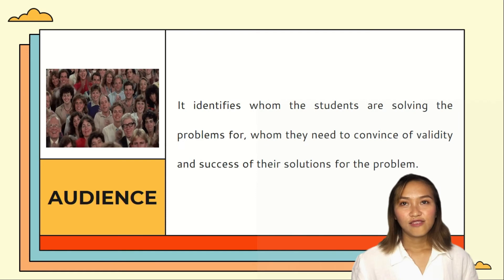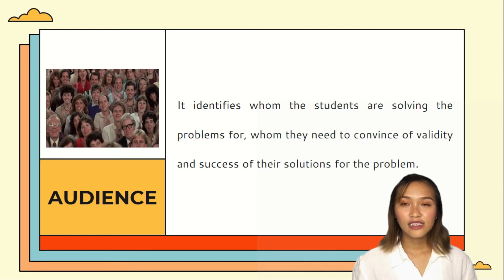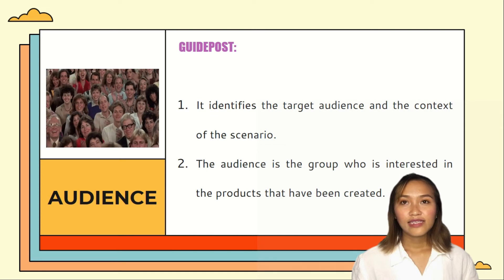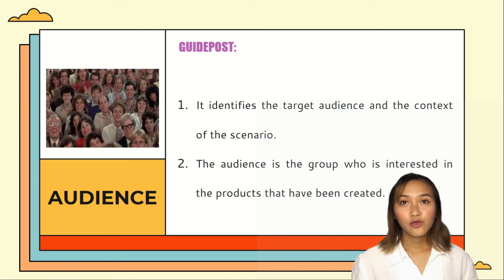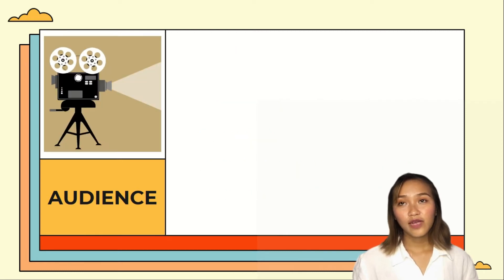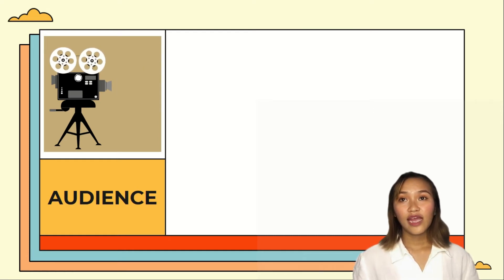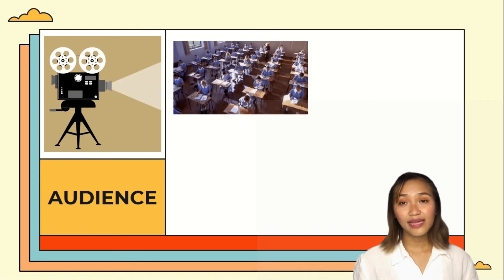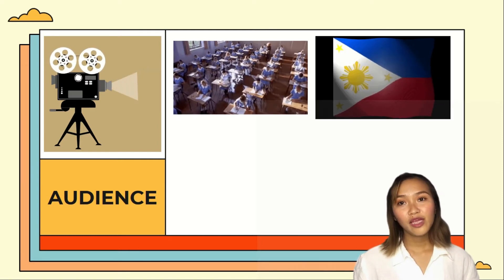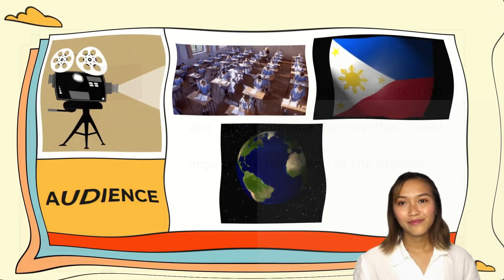Audience identifies whom the students are solving the problems for and whom they need to convince of the validity and success of their solutions. As a guidepost, it identifies the target audience and the context of the scenario. The audience is the group interested in the products created, and they will make decisions based on those products and presentations. The target audience can be classmates, schoolmates, countrymen, or people around the globe.